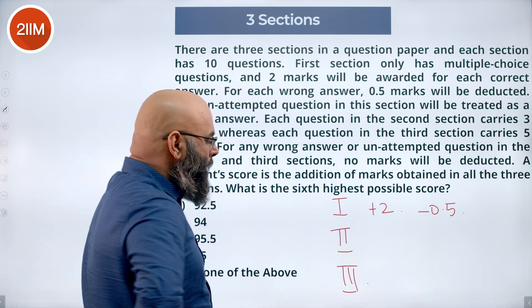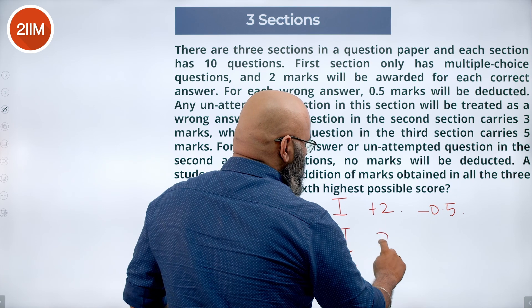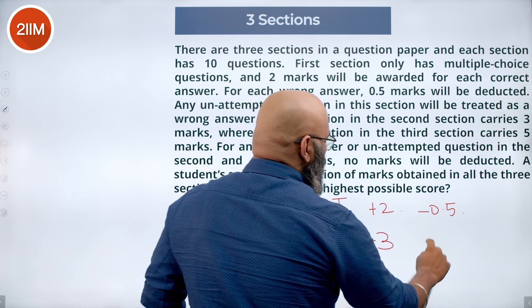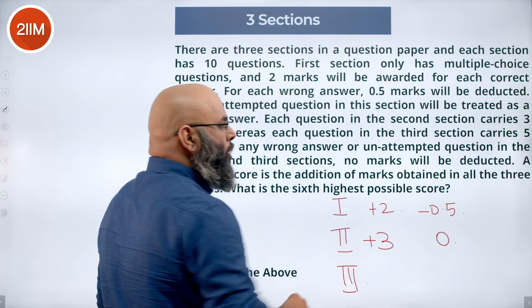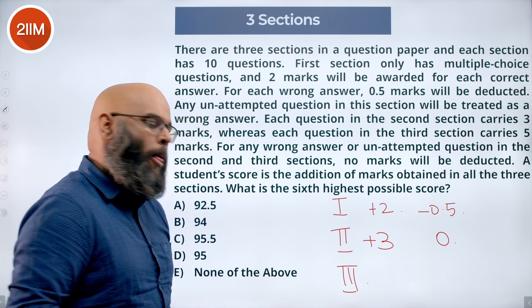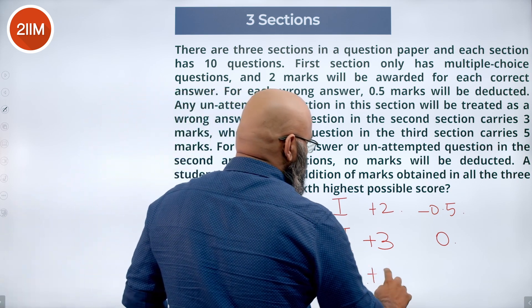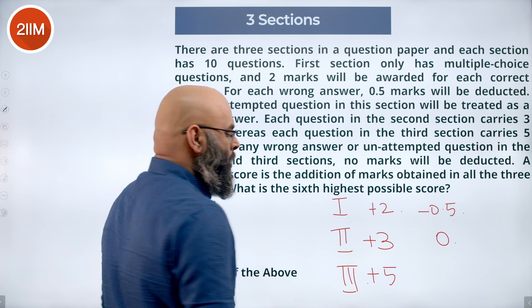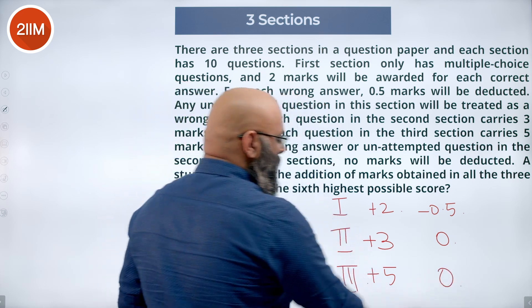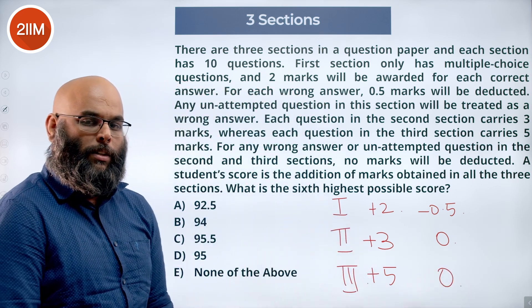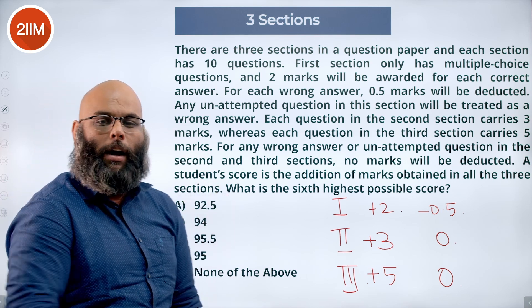Now the second section, a correct answer gets me 3 but a wrong answer is not going to deduct any marks. Similarly, third section has 5 marks awarded for a right question and 0 marks deducted for wrong or unattempted question. So this is going to be our marking type.